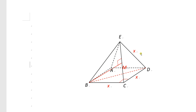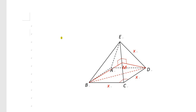We also draw a line from D to EC which is perpendicular to EC. Because EBC is an equilateral triangle, BM is perpendicular to EC, and by symmetry DM is also perpendicular to EC. Since EBC and EDC are congruent equilateral triangles, the required dihedral angle is angle BMD.